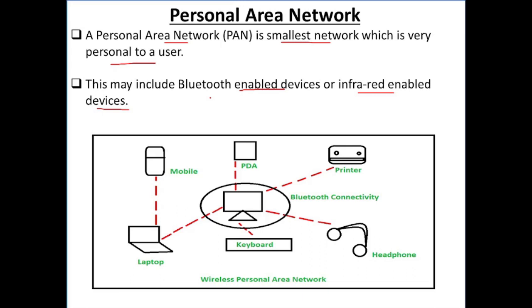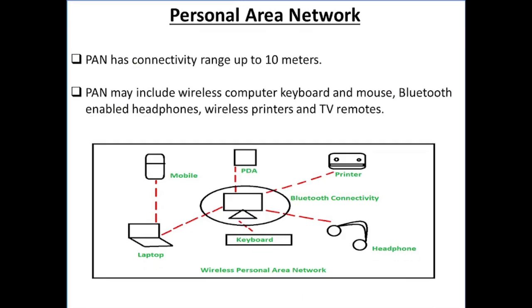For this network, you can transfer data from mobile to a laptop by using Bluetooth or by using a hotspot. PAN has a connectivity range of up to 10 meters. PAN includes wireless computer keyboards, wireless mouse, Bluetooth-enabled headphones, wireless printers, and TV remotes.